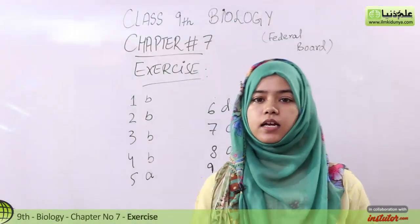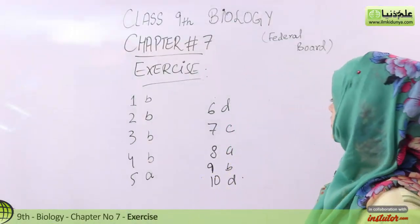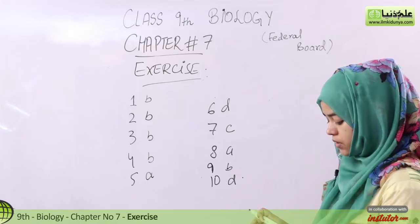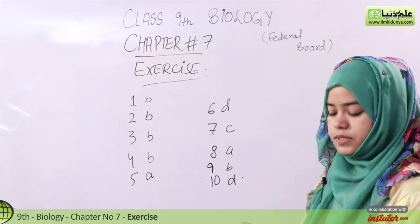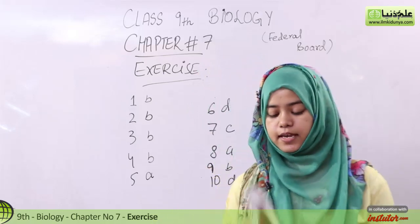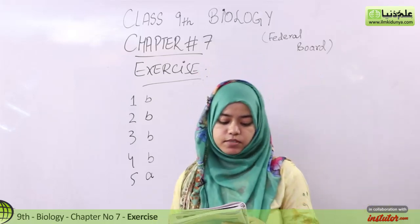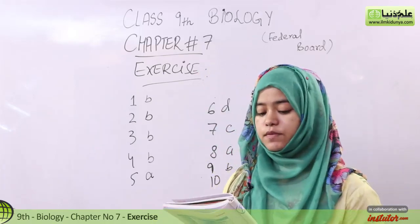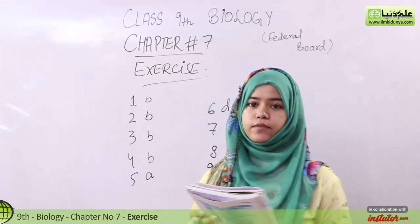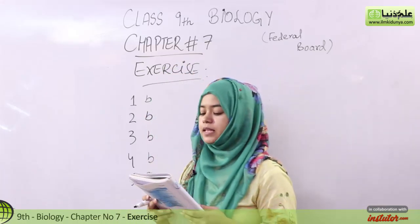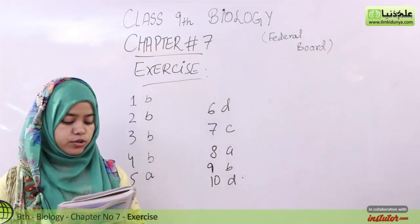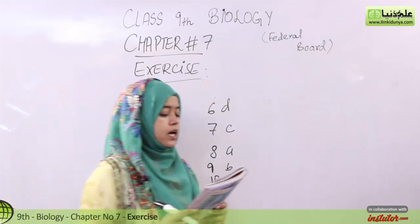Okay students, let's start with the exercise of chapter number seven. First we have MCQs. The first MCQ asks: in which of the following steps of respiration is CO2 produced? The answer is the Krebs cycle.